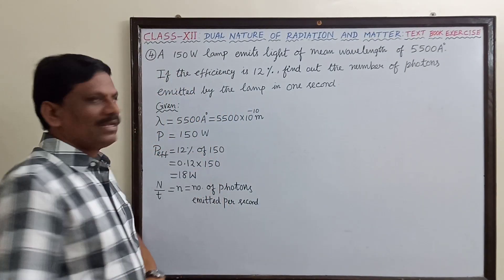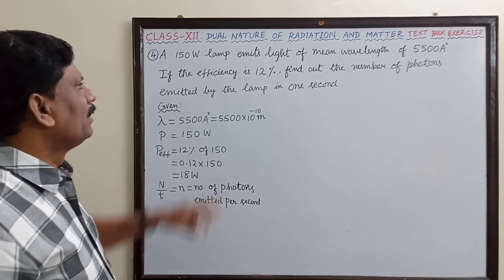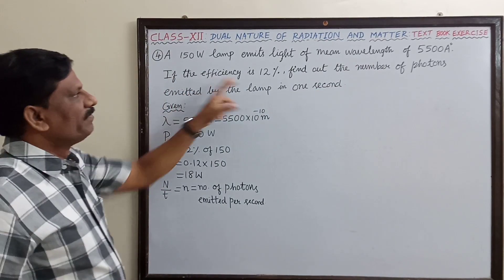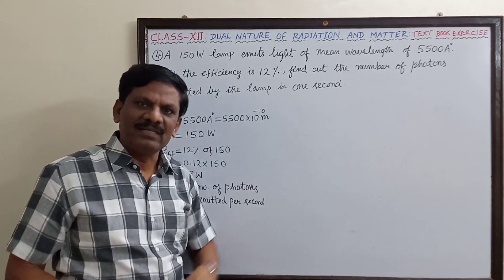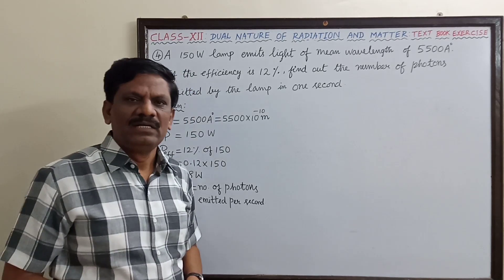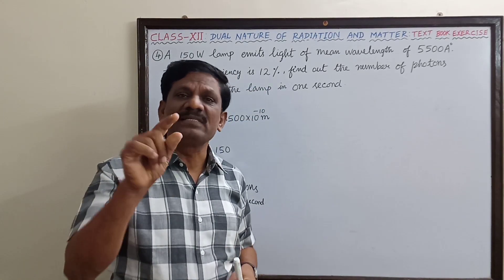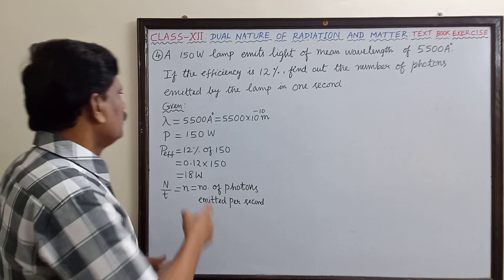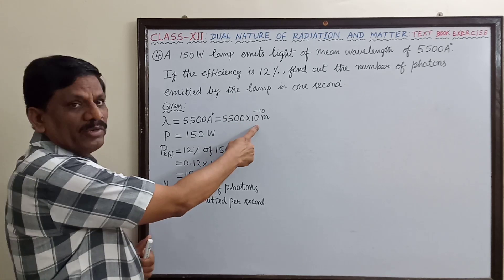We are going to solve the fourth swimming exercise. A 150 watt lamp emits light of wavelength 5500 angstrom units. If the efficiency is 12 percent, find out the number of photons emitted by the lamp in one second. The actual power of the lamp is 150 watt, and the efficiency is 12%, meaning only 12% of this power is utilized for emission of photons.